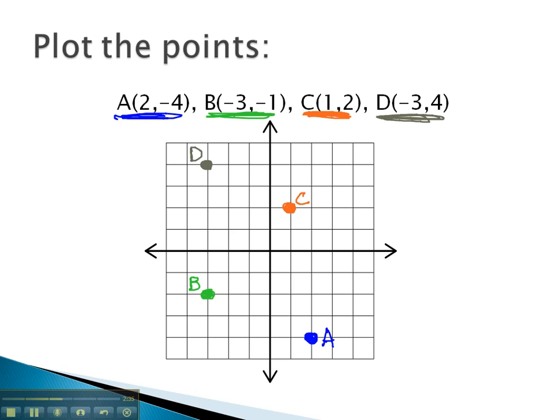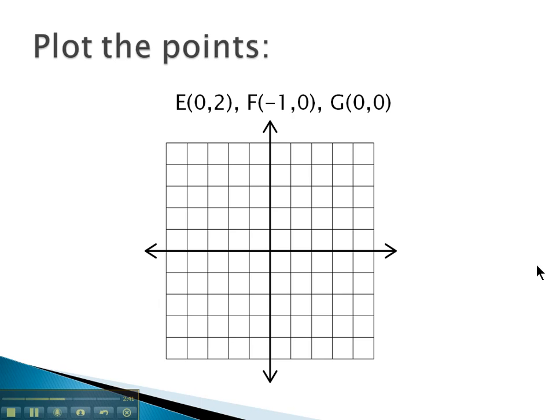Let's take a look at another example, where the first number tells us how far to move right, and the second number how far to move up. Here E is at 0 comma 2. 0 means we move right none, but we only go 2 up. Point E is right here on the y-axis.